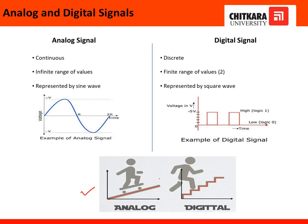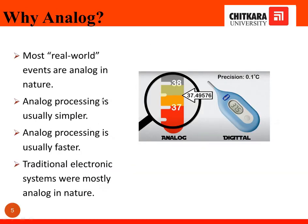Technically, the analog signal is continuous in nature, which is clearly shown in the example of the analog signal. On the opposite side, digital is discrete in nature and is represented by two logic levels. One is high and another one is low. The high shows logic one, and zero shows logic low. Analog is represented by a sine wave, and digital is represented by a square wave.